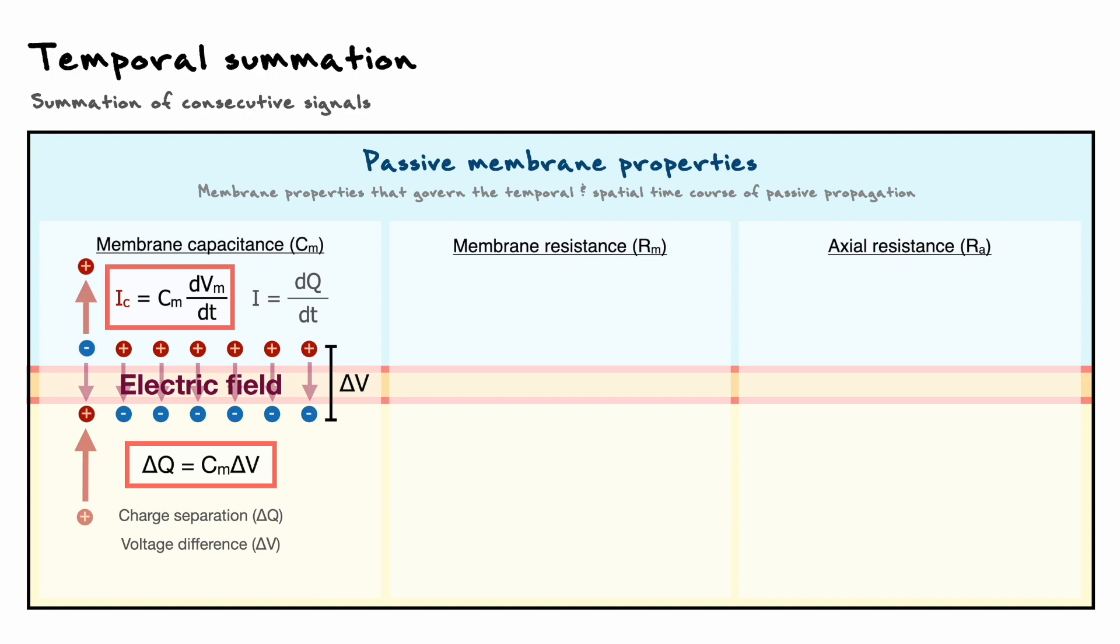Now, the second property is the membrane resistance, which arises from the fact that the membrane has ion channels that let ions flow in and out of the cell. For our temporal summation purposes, there are two distinct types of channels that we need to take into account: leak channels and the ligand-gated synaptic receptors.